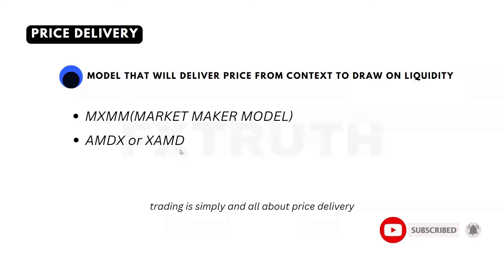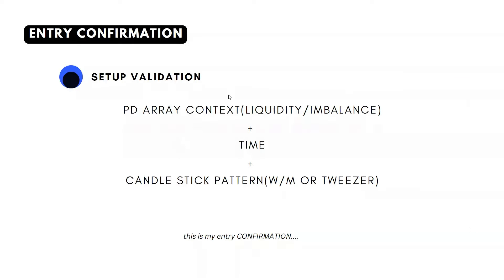The last step is entry confirmation — this is where we validate our setup before clicking buy or sell. We want to see a PD array to frame our context, either liquidity or an imbalance, aligned with time and a candlestick pattern. The candlestick confirmation will be a W, M, or tweezer pattern. These form at key turning points in price, adding extra confirmation and confidence to your setups.